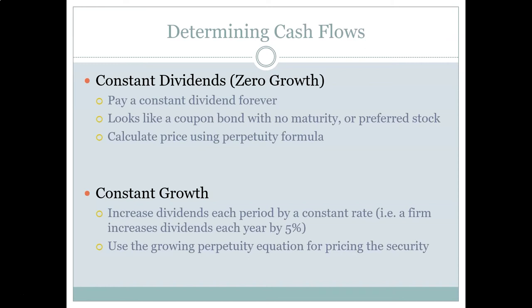The first regime is a constant dividend regime, where the dividend is the same forever — a level cash flow that goes on forever — which is just a simple perpetuity. The price of a share with dividends like that is the present value of a simple perpetuity. The second regime is a constant growth regime, where the firm pays dividends growing at a relatively constant rate, like Procter & Gamble growing from four cents to five to six to seven cents. We value this as a growing perpetuity, where cash flows grow at a constant rate forever.